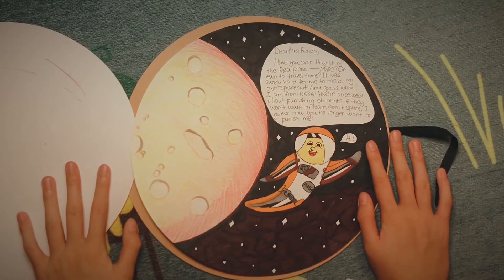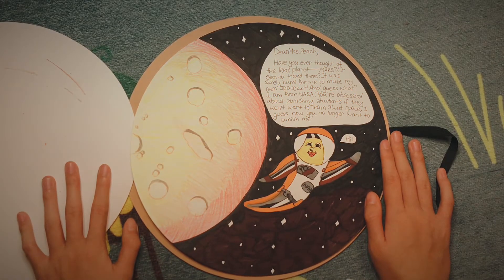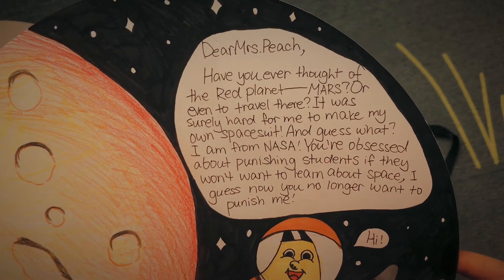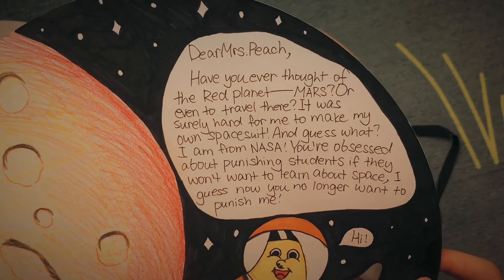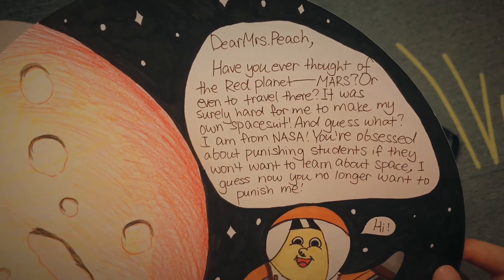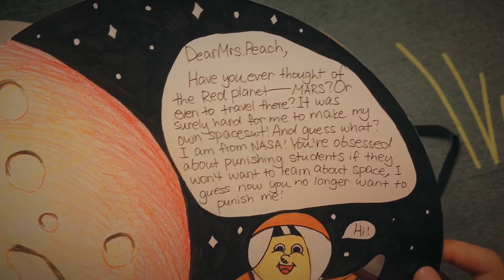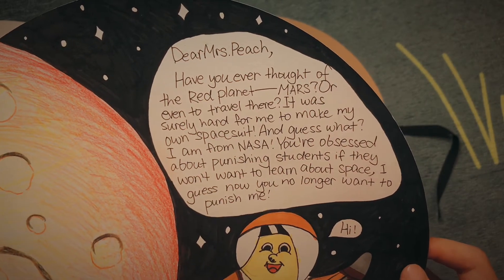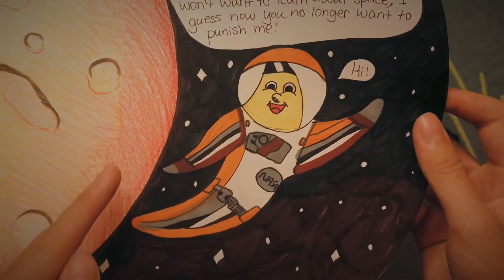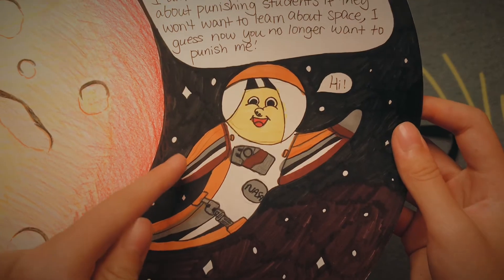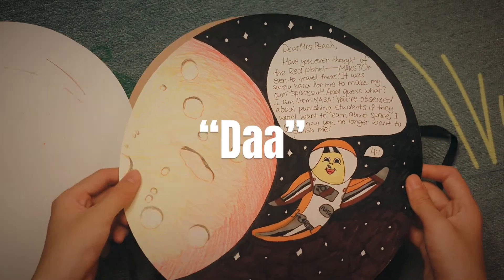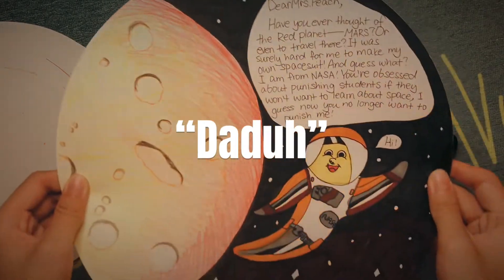The last destination: Mars! Oh my god, that's cute. 'Dear Mrs. Peach, have you ever thought of the red planet Mars, or even traveled there? It was surely hard for me to make my own space suit, and guess what — I'm from NASA! You're obsessed about punishing students if they don't want to learn about space. Guess now you no longer want to punish me!' That's a funny banana. This looks exactly like the space suits from 'The Martian' because when I was in second to third grade I was obsessed with Mars. Take a moment to appreciate this page!